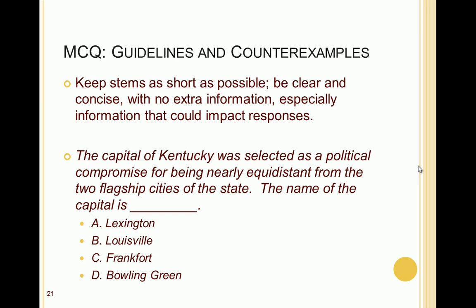You should also try to keep stems as short as possible — clear and concise with no extra information, especially information that could impact responses or distract examinees. For example, stating that 'The capital of Kentucky was selected as a political compromise for being nearly equidistant from the two flagship cities of the state' gives away that neither flagship city is the capital, automatically reducing the question to just two options — Frankfort or Bowling Green.